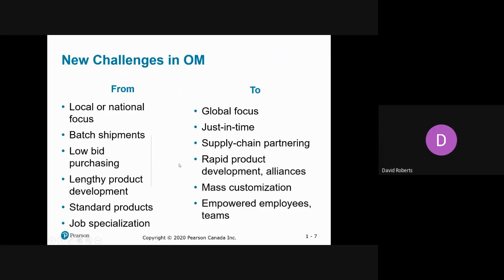One of the things that has happened in operations management is a shift from a localized type of mentality to more of a global focus. It's not unusual for a company to source things from China or Brazil or wherever in the world. And you've gone from just accepting the lowest bid to partnering with companies in your supply chain — building a friendship with them, so they're willing to do things they wouldn't otherwise.